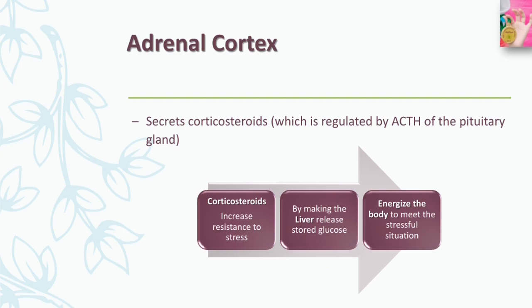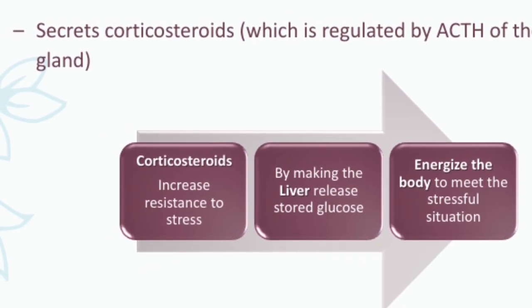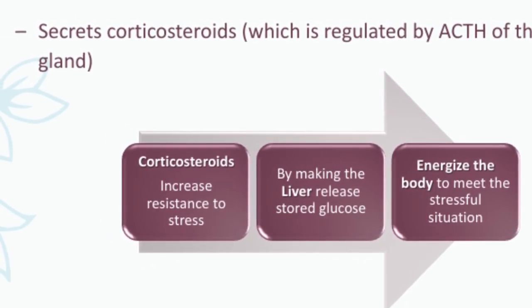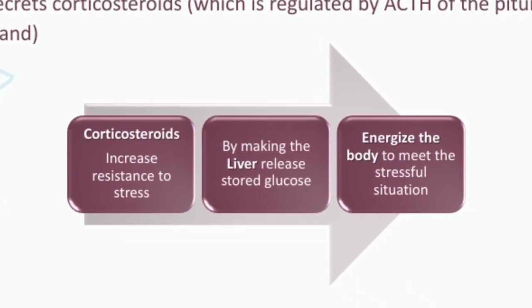Both the adrenal cortex and adrenal medulla produce hormones involved in the human stress response. The adrenal cortex secretes corticosteroids, and this secretion is regulated by ACTH from the pituitary. Corticosteroids increase resistance to stress by making the liver release stored glucose, thus energizing the body to meet stressful situations.